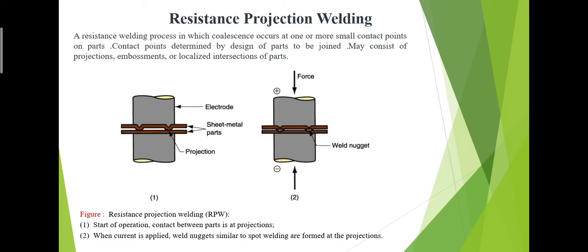Good morning students, in this lecture we will discuss resistance projection welding. It is also a type of resistance welding process in which coalescence occurs at one or more small contact points on parts. Contact points are determined by design of parts to be joined and may consist of projections or localized intersections of parts.